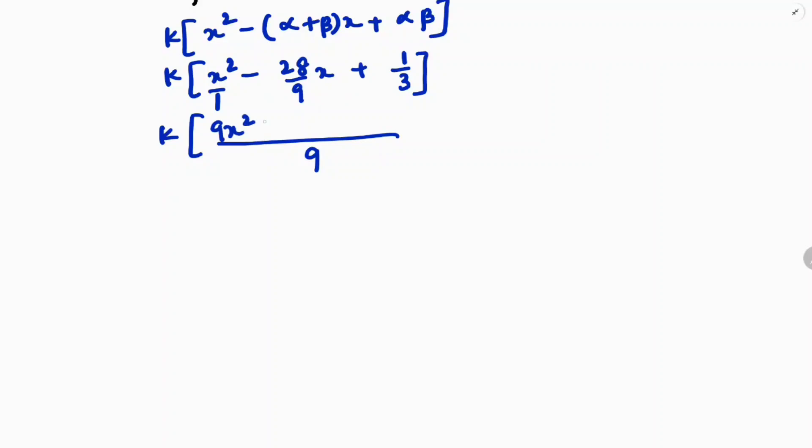Now if we take LCM, LCM is 9. So I will multiply by 9: 9x² - 28x, and here it is 3, so multiply by 3 to make it 9. So the polynomial is 9x² - 28x + 3.